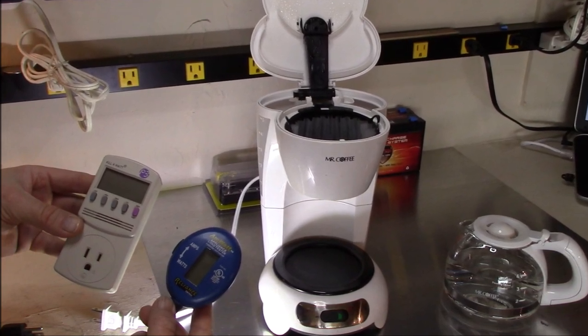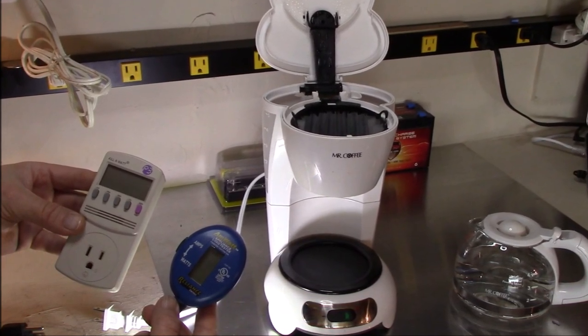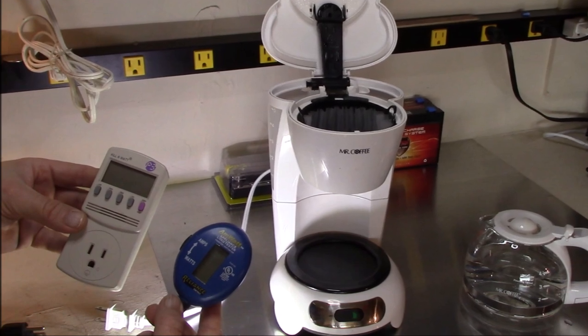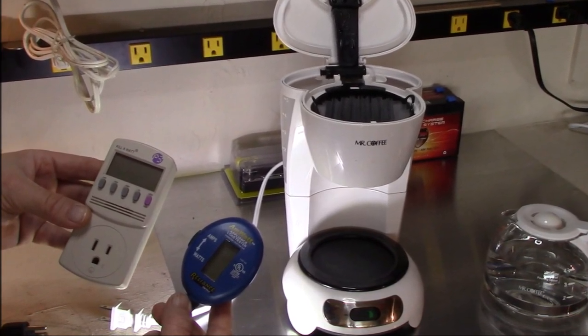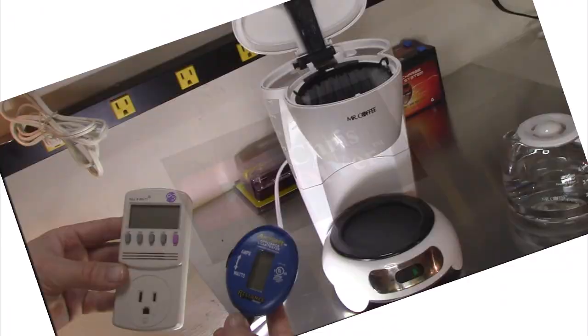So which one's better, kilowatt meter or this Reliance Controls? I actually like them both. The kilowatt meter of course shows the kilowatt hours, but the Reliance Controls looks like it's way more accurate, UL-listed too. Okay guys, thanks for watching and hope you enjoyed this video.